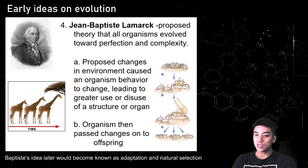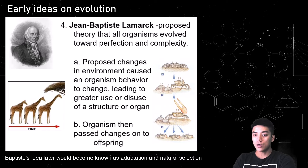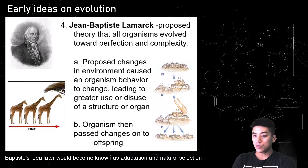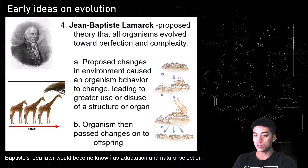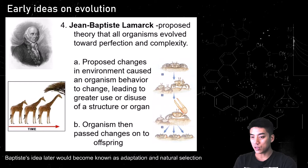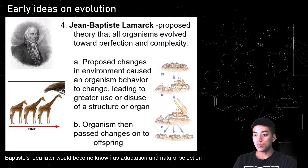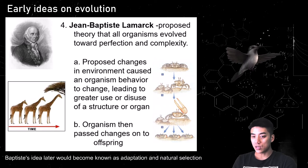John Baptiste Lamarck's early ideas would later become known as adaptation and natural selection, although he wasn't completely correct because his ideas were more on the extreme side. He proposed that the environment would cause an organism to adapt by using or not using a certain structure or organ, and this would allow the organism to survive and pass those changes on to offspring. In that logic, if you start flapping your arms a lot as a human being, you would develop wings and learn how to fly.